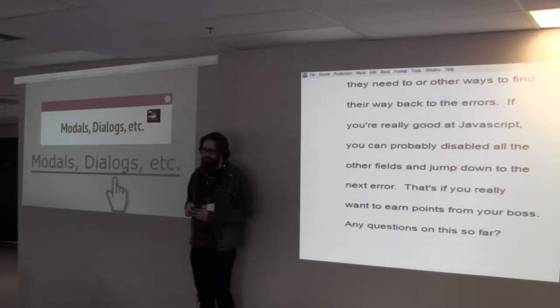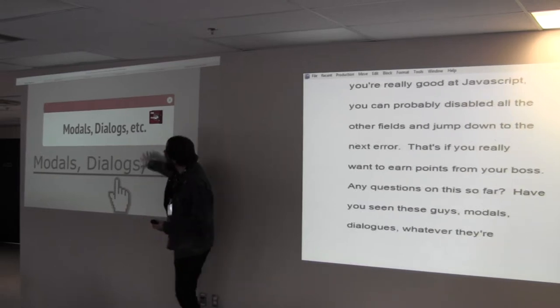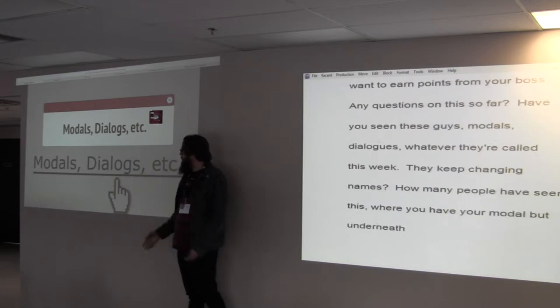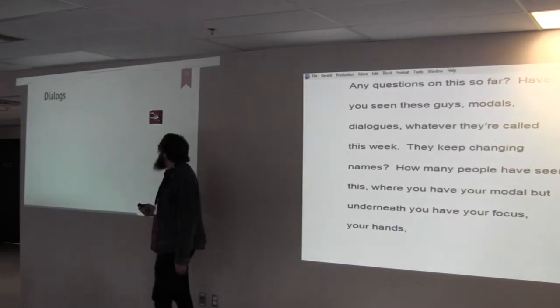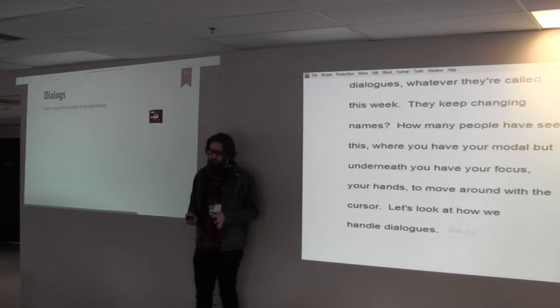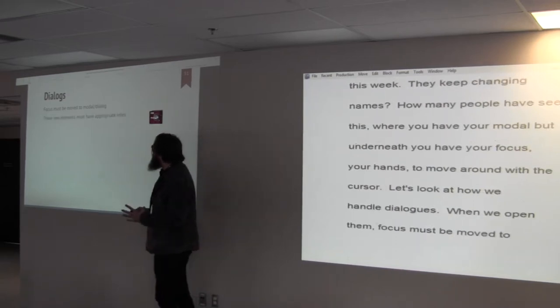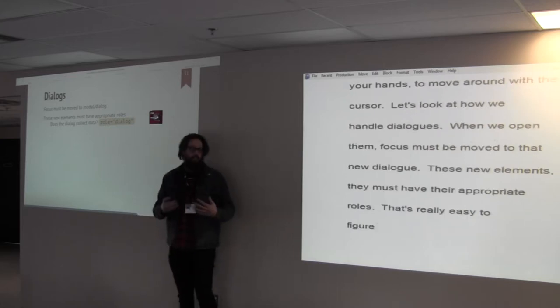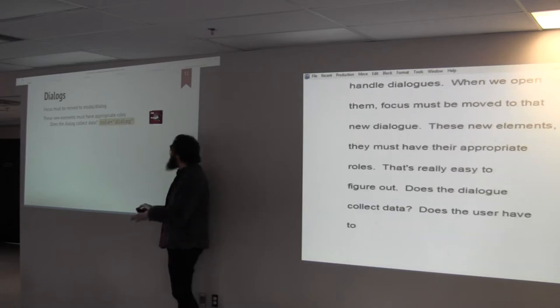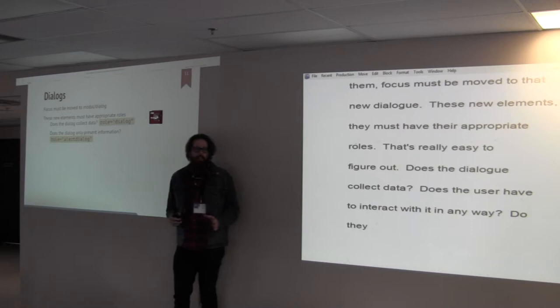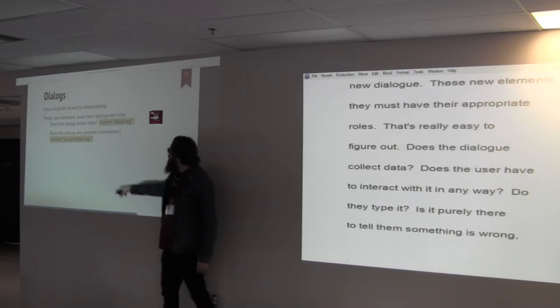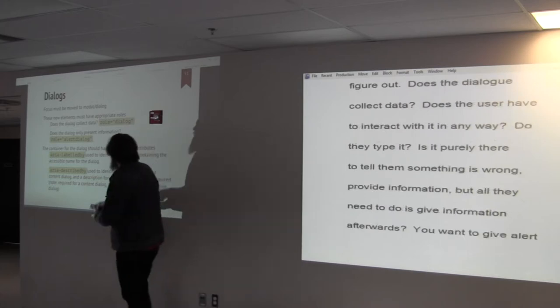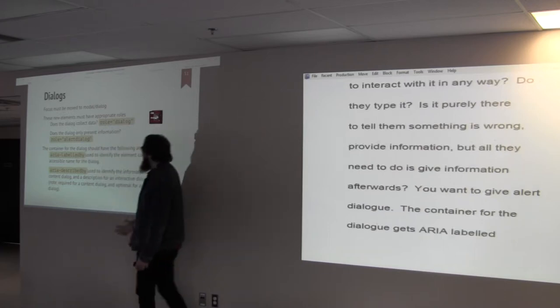How many people have seen dialogues, modals, pop-ups, whatever they're called this week? More specifically, how many people have seen this exact thing, where you've got your modal, but then underneath, you've got your focus, your mouse sort of moving around. So let's look at how we handle dialogues. When we open them, programmatic focus must be moved to that new dialogue. These new elements, they must have their appropriate roles. That's really easy to figure out. Does the dialogue collect data? Does the user have to interact with it in any way? Did they submit something? Did they type it? Yes, then it gets role dialogue. Is it purely there just to tell them something is wrong, or provide information, but all they need to do is just hit the button afterwards? Then you want to give it role alert dialogue. Then for the dialogue, you can ARIA label by it, and you might use ARIA described by it, depending on what the purpose of the dialogue is.